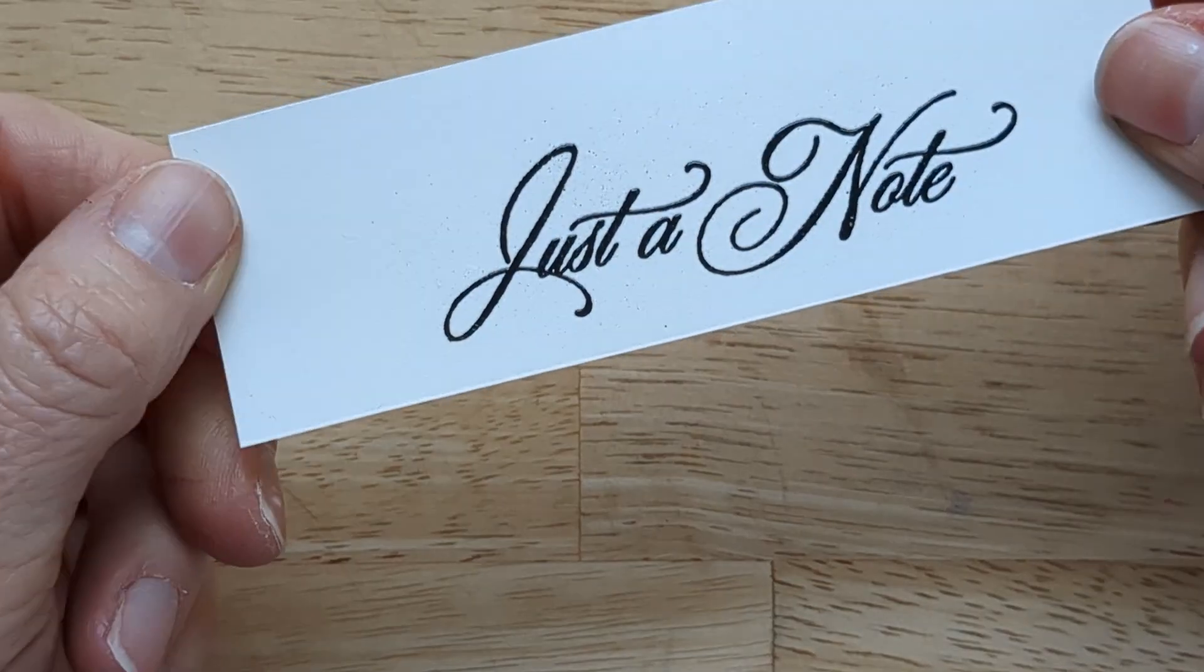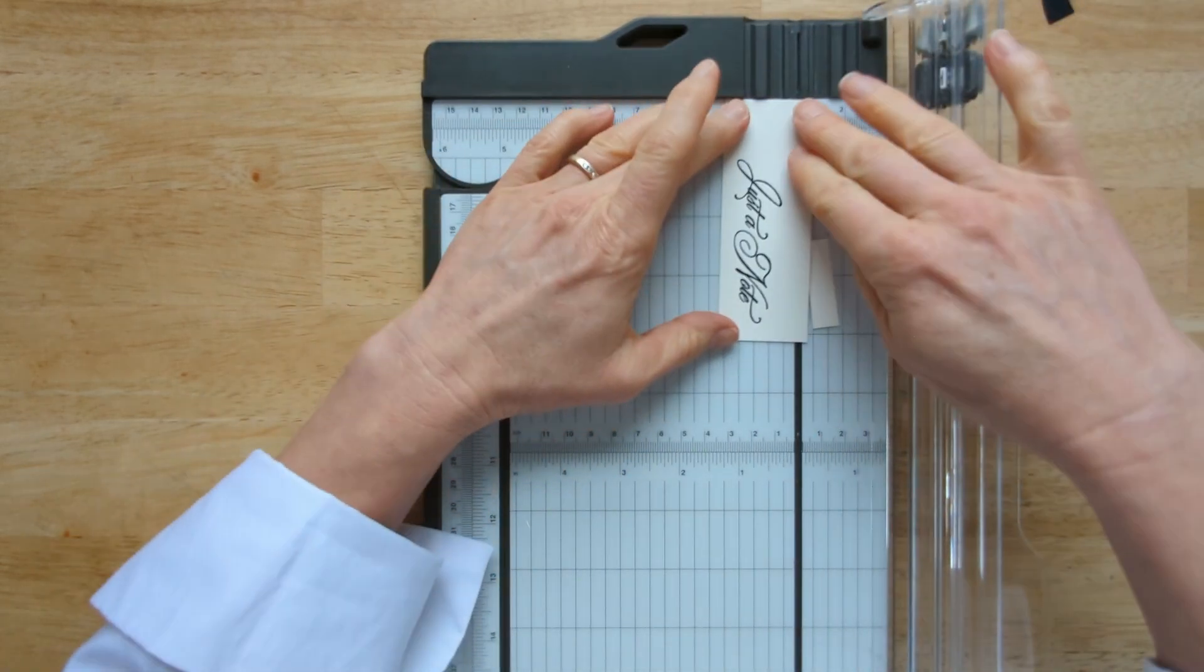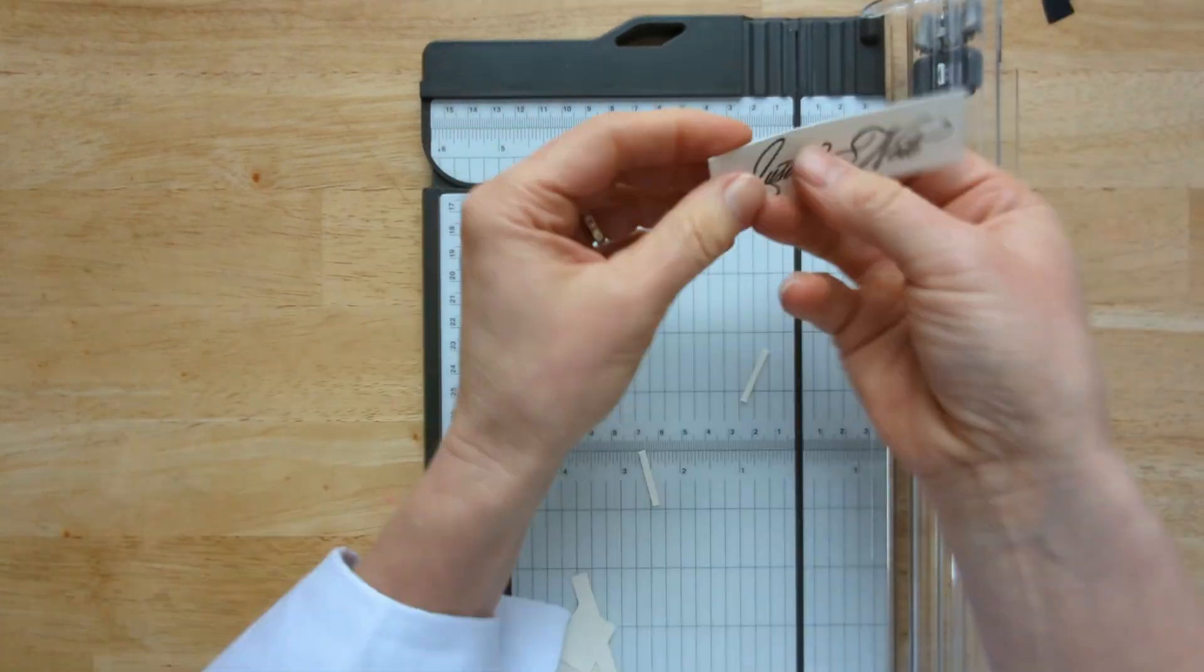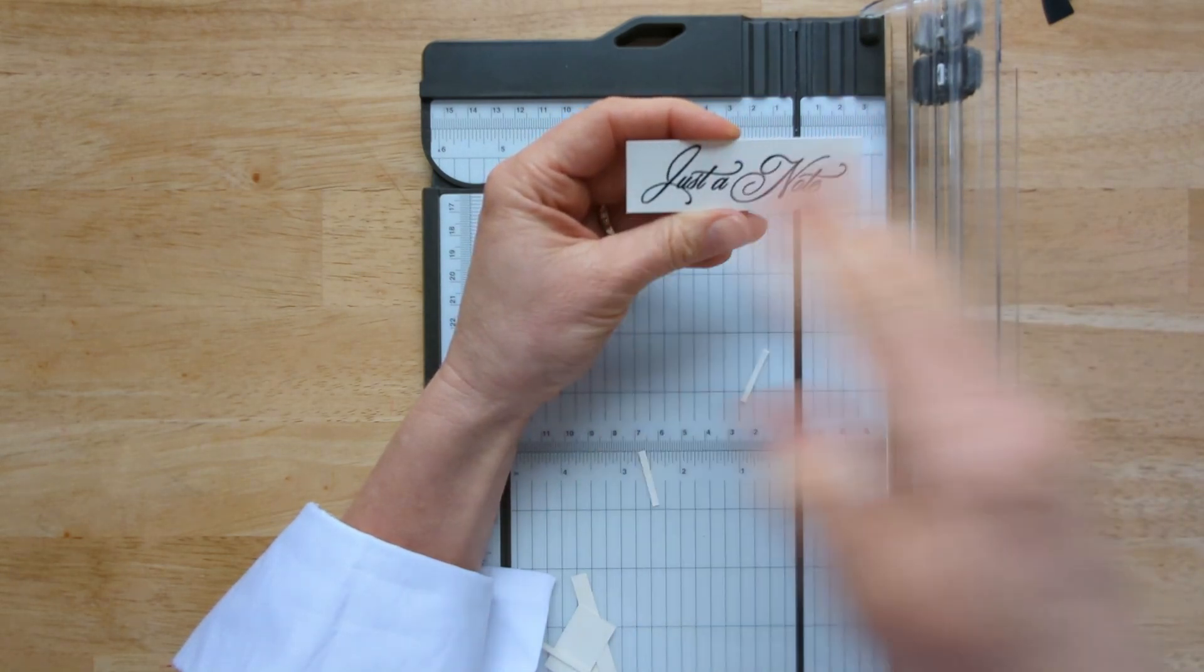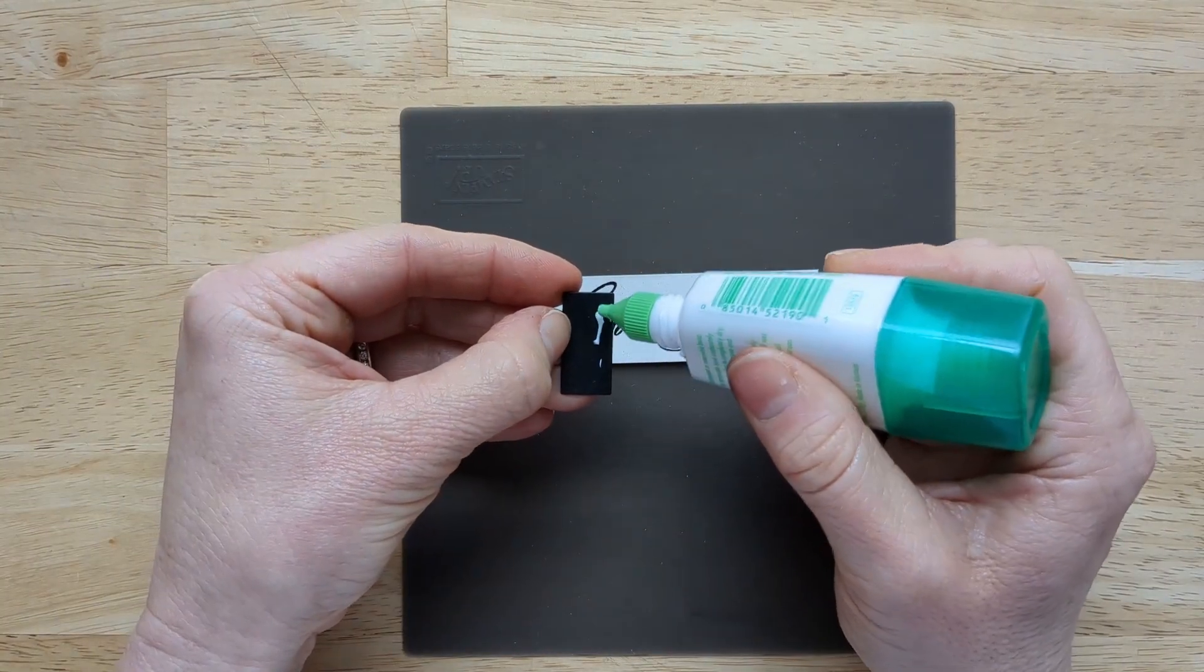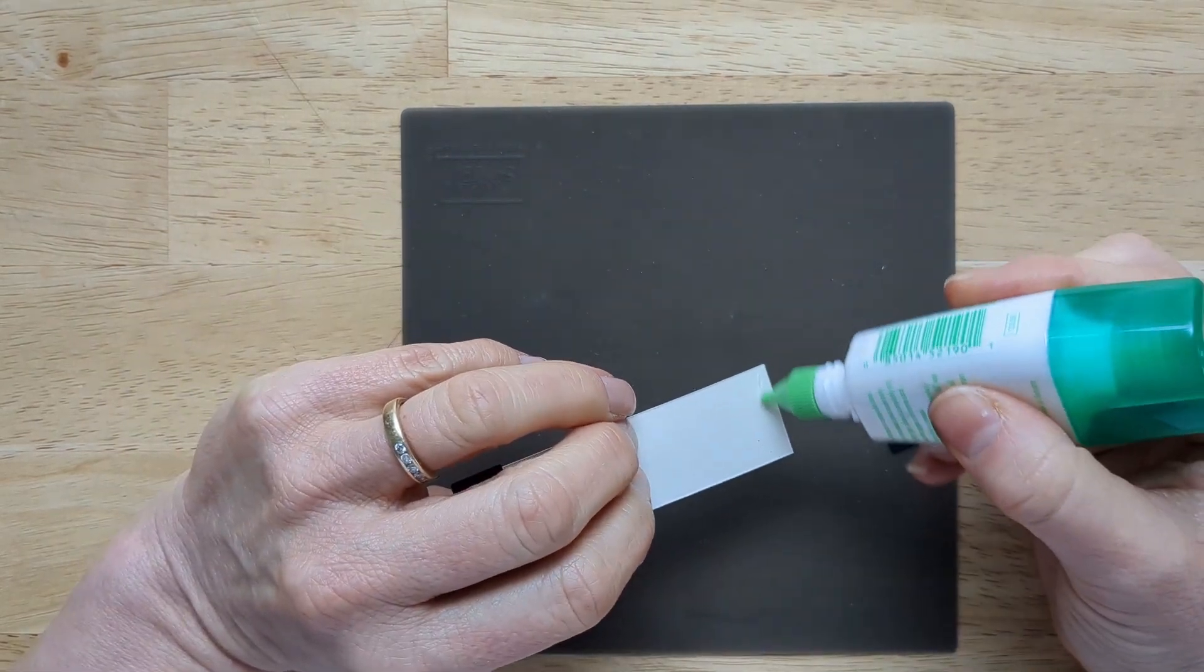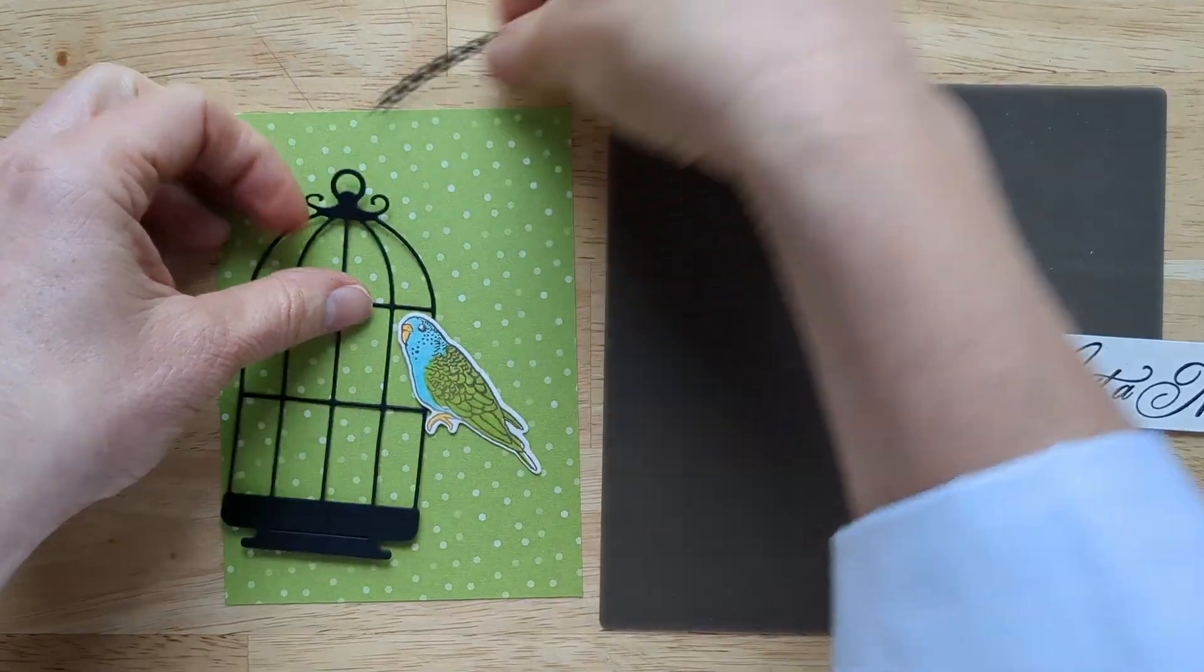Now you're just going to grab your paper cutter and you're just going to trim this down to size, just to whatever size sentiment that you have. I didn't give you the measurements for that in case you choose a different sentiment to use. So you're just going to stamp towards the bottom of your paper and then trim all around until it's the size that you need. Now what I'm going to do is take two of those little rectangles that came out of the birdcage when we used it because I love using scraps and I'm just going to put them on the end of my sentiment just to give it a little extra setting off that black. I thought that looked really pretty. Now we've got all of our pieces.